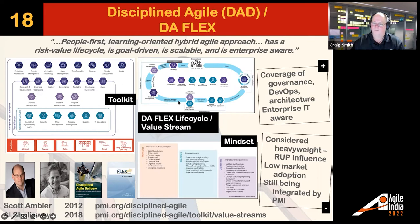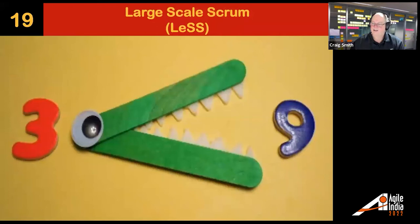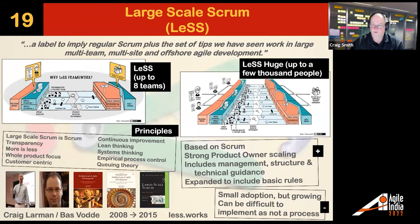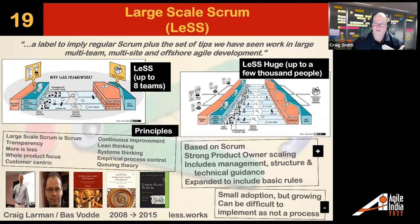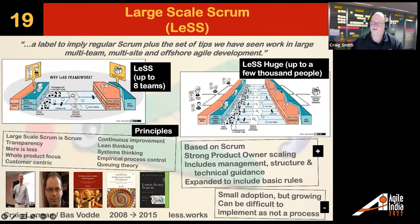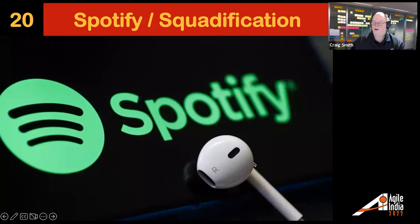LeSS — Large Scale Scrum — was built on work from the 2000s by Craig Larman and Bas Vodde. Back in the early days it was just their two books, Scaling Lean Agile Development, that people had for scaling guidance. It wasn't until 2015 when they really started to document Large Scale Scrum. It's about taking Scrum and scaling it — LeSS for up to eight teams and the rather silly-named LeSS Huge for up to a few thousand people. It's been very much around case studies rather than direct instruction, which is why people struggle with it.